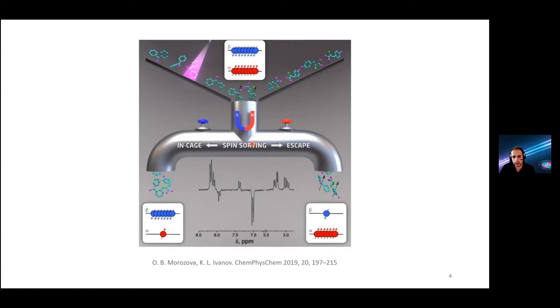It relies on radical pair mechanism and is nicely illustrated on this cover image. There is some chemical reaction which is initiated by light, then certain radicals are produced. Then these radicals interact and at a certain moment there is a spin sorting stage. In the beginning you can imagine there is some nuclear spin which is more or less equally populated in alpha and beta state.